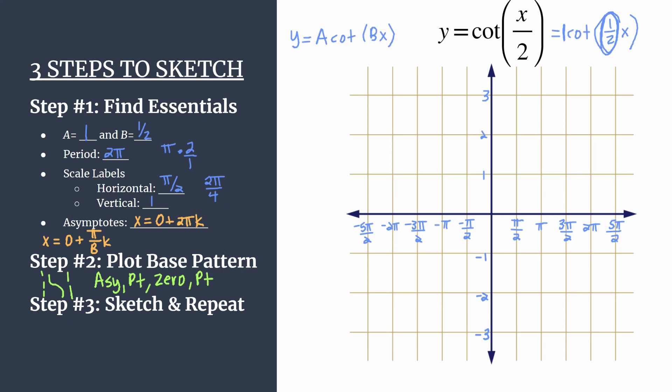So let's go ahead and sketch on this first cycle or plot these points. We have our asymptote on the y-axis at x equals 0. And then our first point, our upper curve shaping point, moved to that first horizontal tick mark to the right, so pi over 2. And the y-coordinate is going to be A.